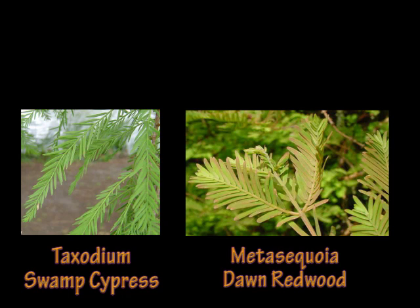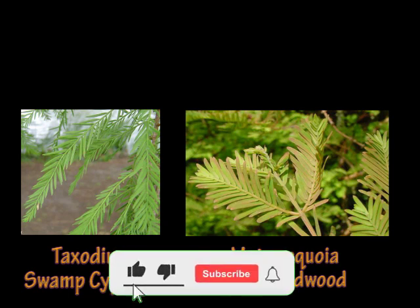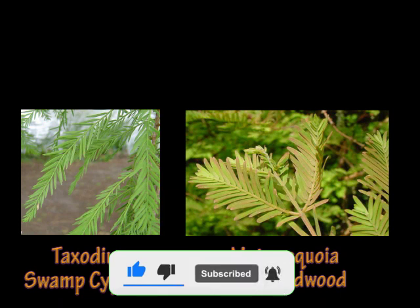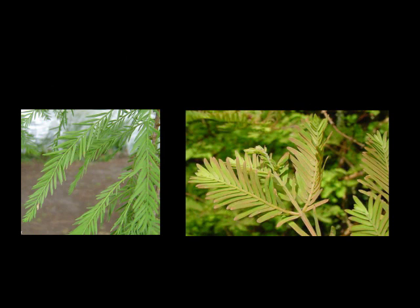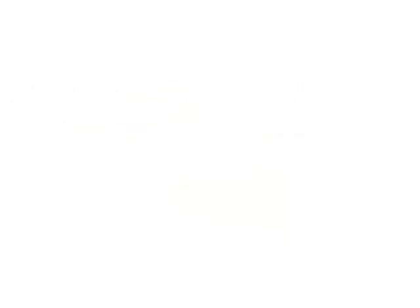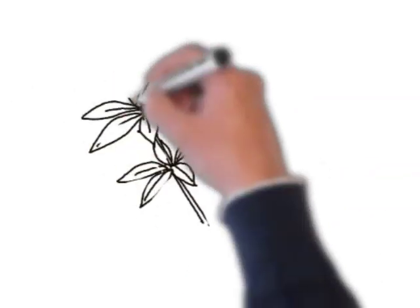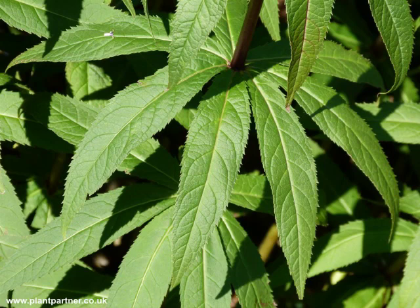On the left we have Taxodium distichum and on the right Metasequoia glyptostroboides, the dawn redwood. If you look closely, on the left the leaves are alternate and on the right they are opposite. Otherwise they look identical and can be mixed up really easily. And a lot of plants like this lovely Veronicastrum have a whorl around the stem.